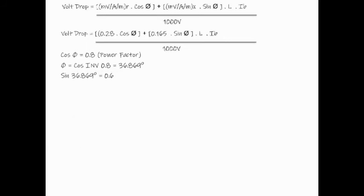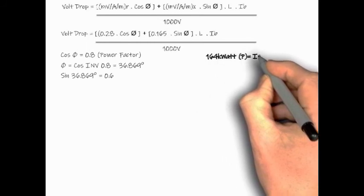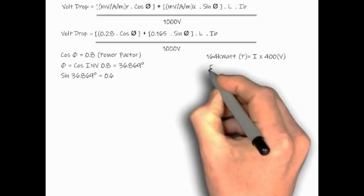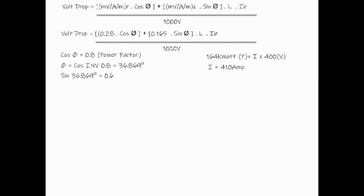Next, I notice my current is not indicated, but we have the power value of 164 kilowatts. Formula to calculate power is P equals IV. If I were to divide my 164 kilowatts by 400 volt supply, using the 164 kilowatts divided by 400 will give me 410 amps.